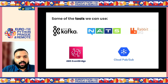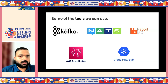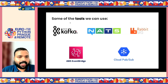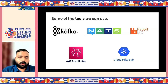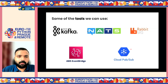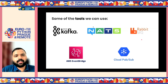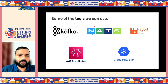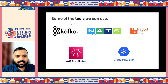You might have heard of or used some of these tools: Apache Kafka, NATS, RabbitMQ, EventBridge, Google Cloud Pub/Sub, and many others. We'll be focusing on developing using NATS as it's very simple to set up and get started.